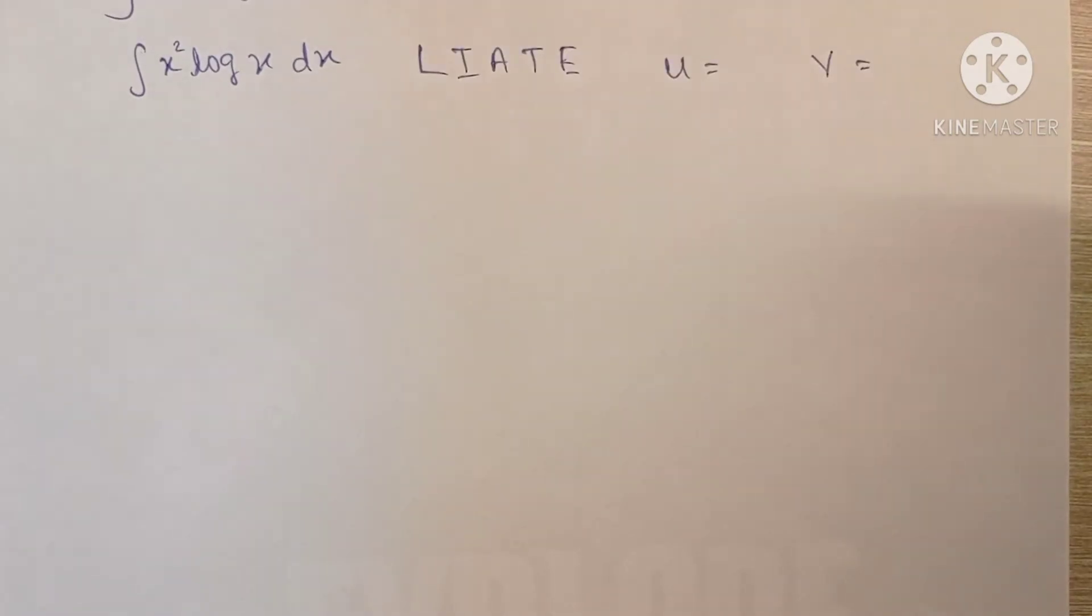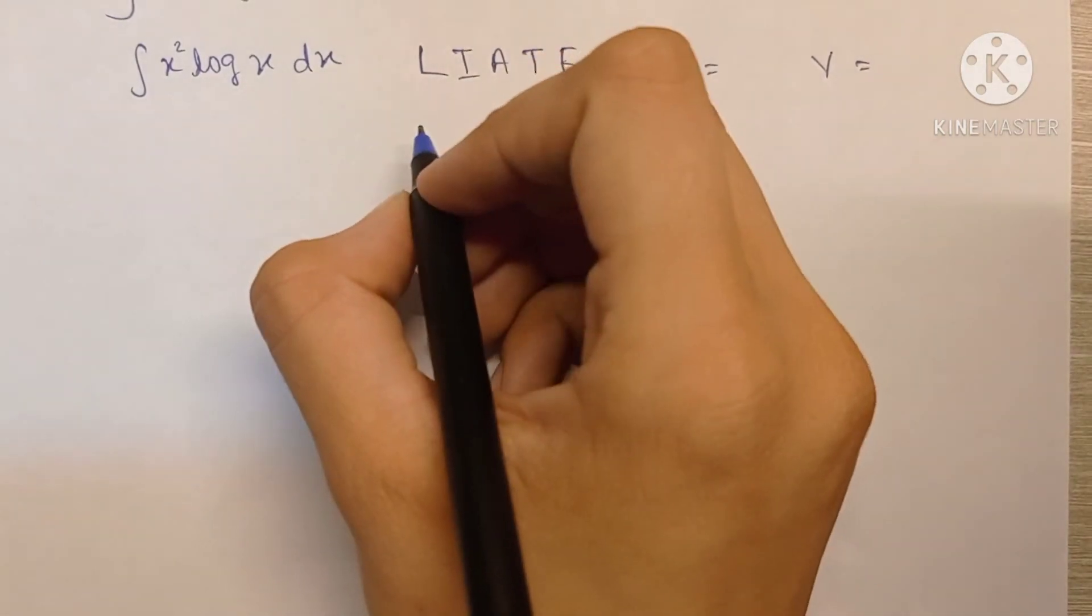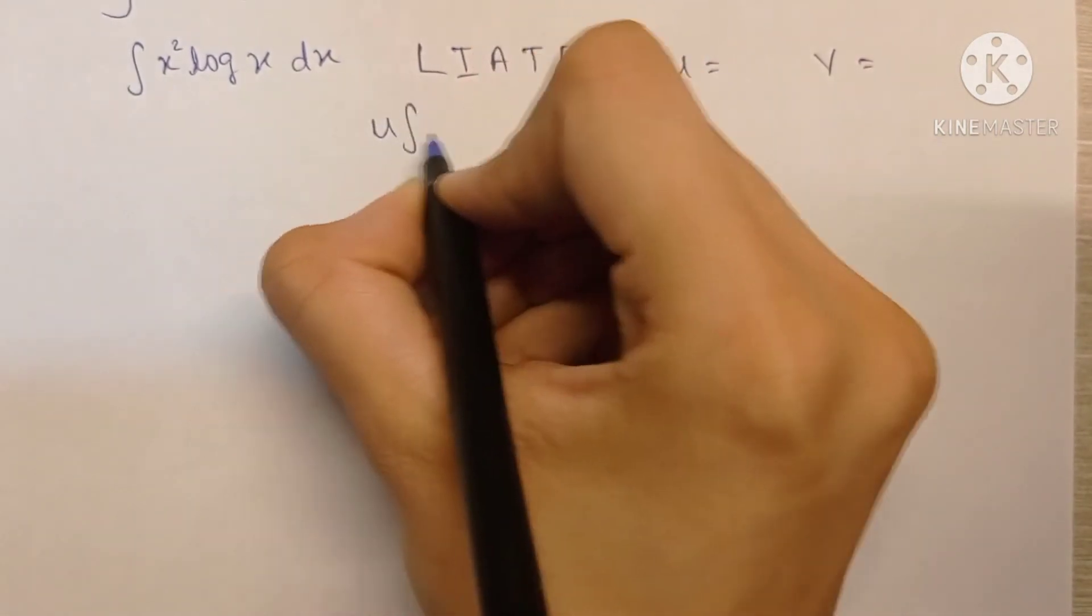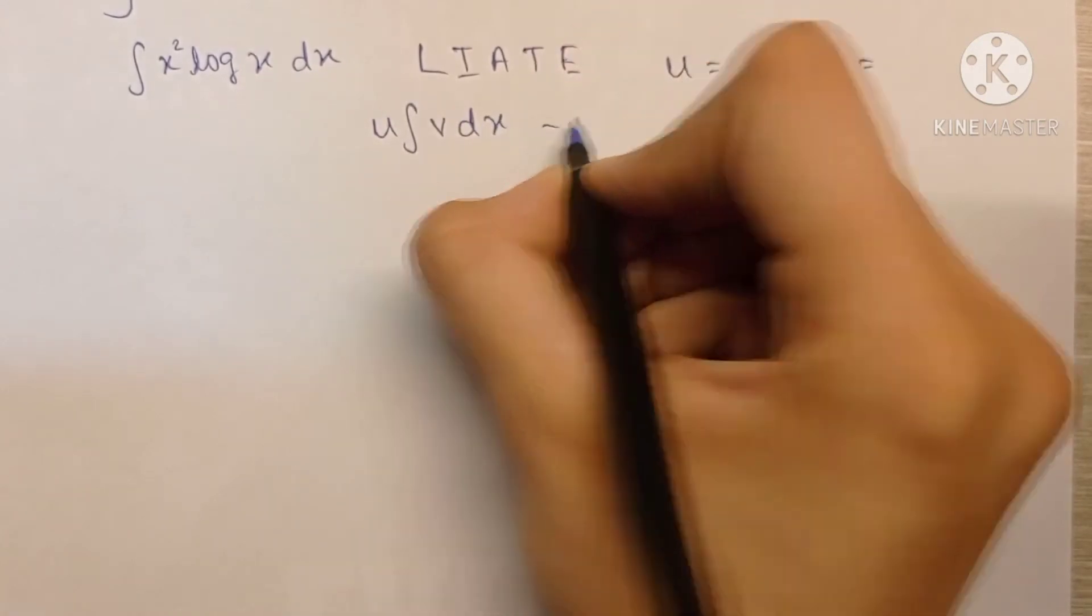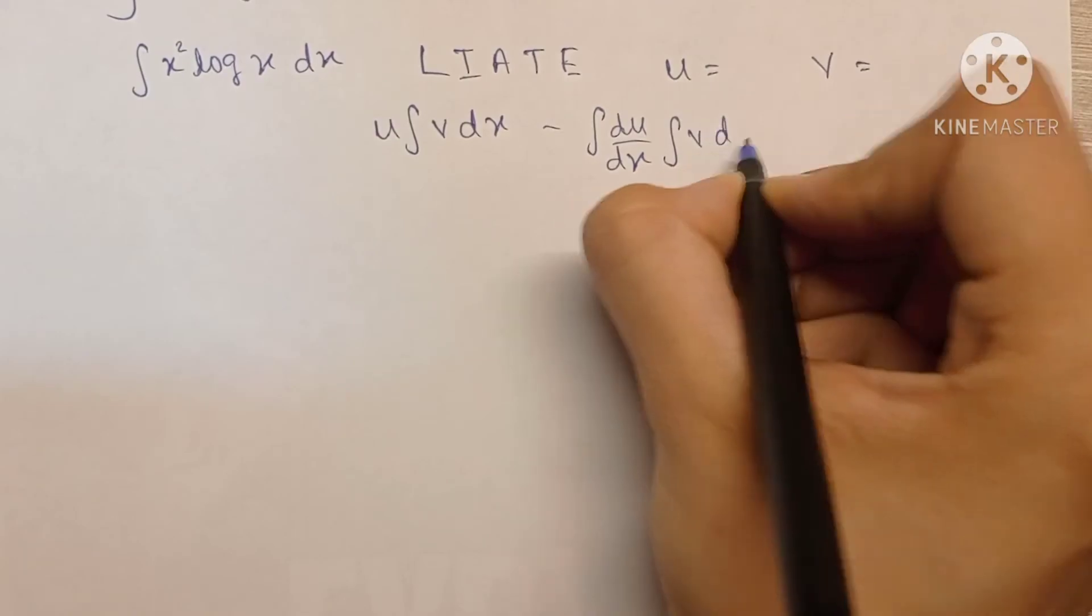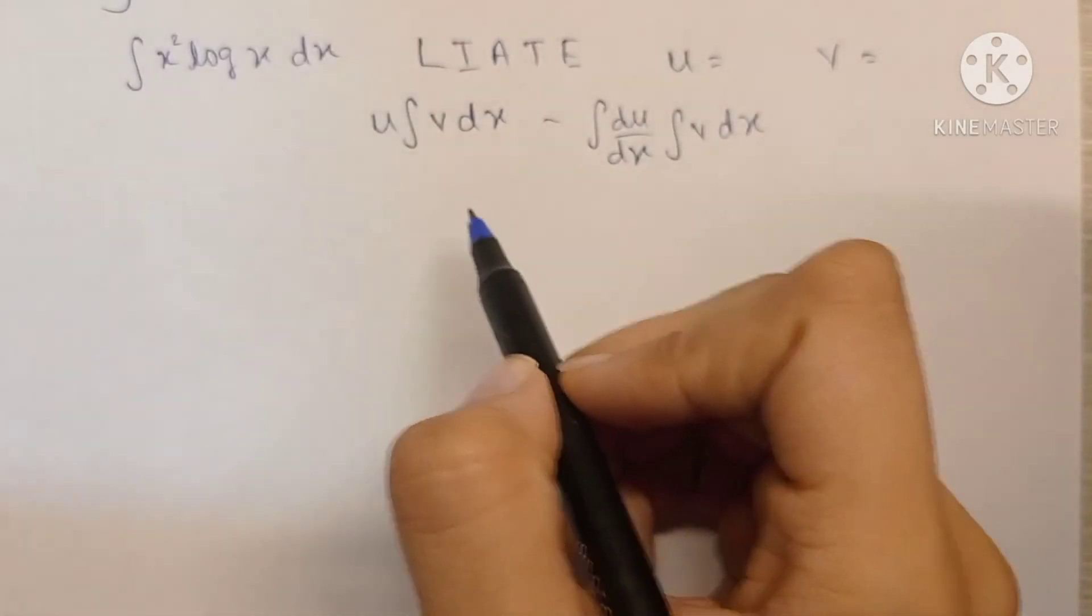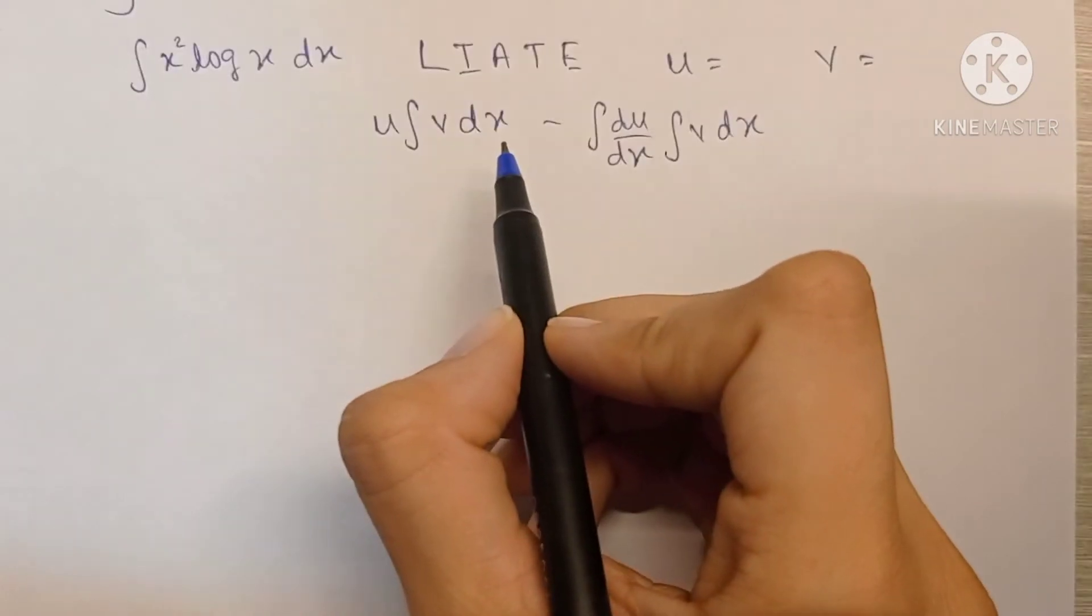We'll be solving this question using the LIATE rule. We'll be solving it by parts, and the formula for by-parts is: u into the integration of v dx minus the integration of differentiation of u into the integration of v dx. LIATE helps us decide which term we should keep as u and which term we should keep as v.